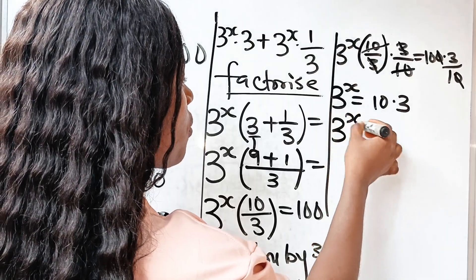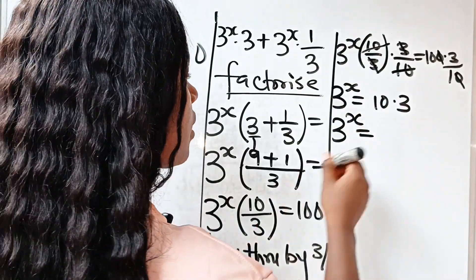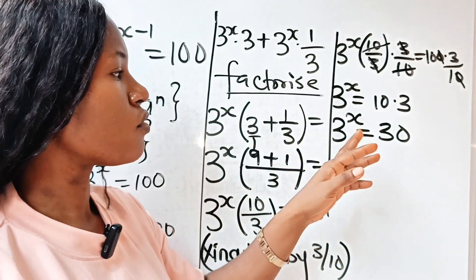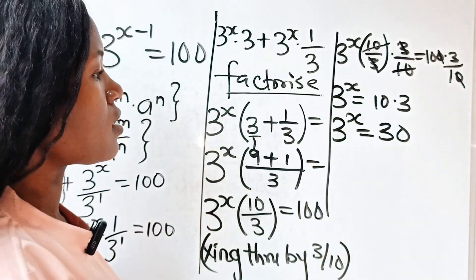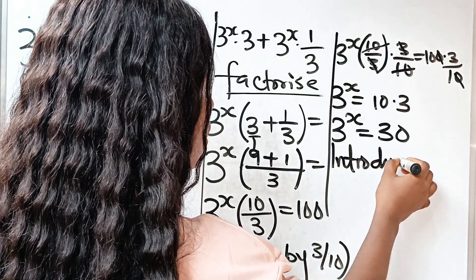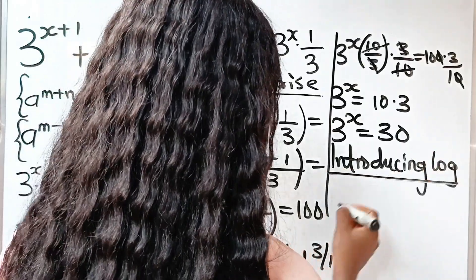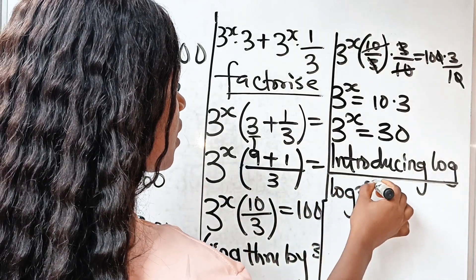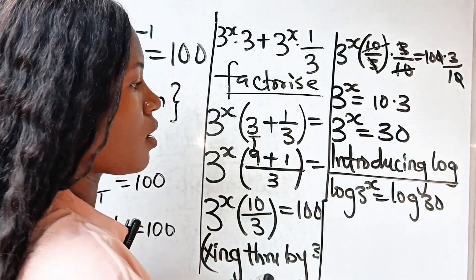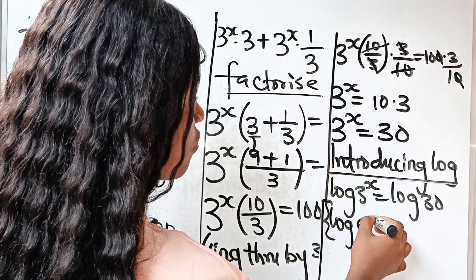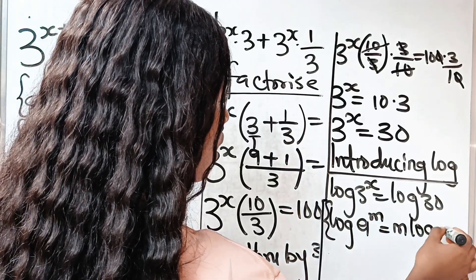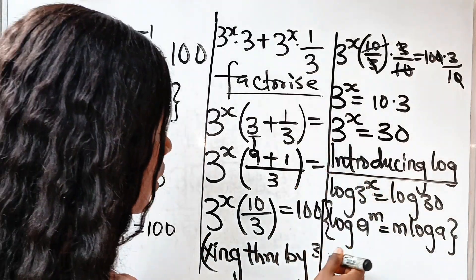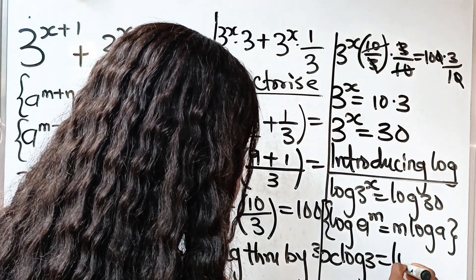So this is the same as 3 to the power of x is equal to 30. Because the power is x and that is our variable, the only way to find the value of x is to introduce log to both sides. So introducing log, we will have log 3 to the power of x is equal to log 13. Now remember that log a to the power of m is equal to m log a. Using the power rule, we can bring x down, so we have x log 3 is equal to log 13.